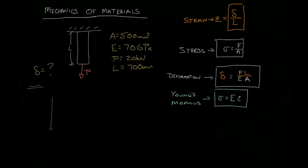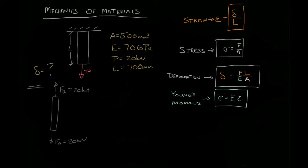The first thing we're always going to do is draw ourselves a free body diagram. Here's our bar. At the bottom, there's going to be some applied force, and we know that to be 20 kilonewtons. In addition, we're going to have some sort of reaction force. Because everything's static, it stays there, and we have a reaction force of 20 kilonewtons. A simple enough setup — we've seen this before in high school physics. It looks just like a spring problem.